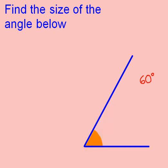I always check that my answer makes sense by looking at what type of angle I have. I can see that this is an acute angle. Acute angles are less than 90 degrees, and my answer is less than 90 degrees, so I know that this is reasonable.